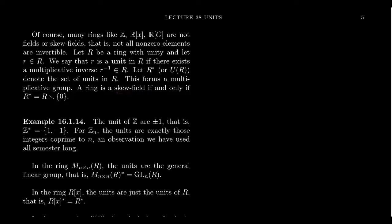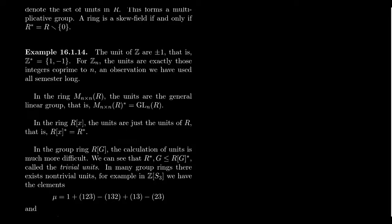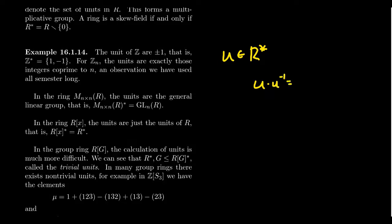Let's look at a few examples. If we take the ring of integers — this is not a field — the group of units is going to be {±1}. The only integers which are invertible are plus one (the unity) and negative one. You can also argue that if an element is a unit, then its additive inverse is likewise a unit: if u belongs to R-star, then u times u-inverse equals one.